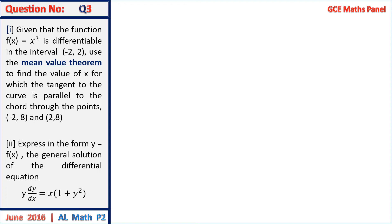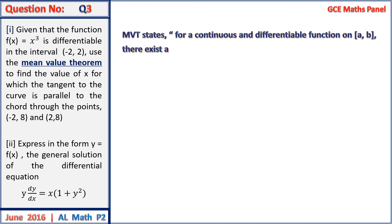Question 3: given that f of x equals x cubed is differentiable on the interval minus 2 to 2, use the mean value theorem to find the value of x for which the tangent to the curve is parallel to the chord through the points (minus 2, minus 8) and (2, 8). The mean value theorem states that for a continuous and differentiable function on interval A to B, there exists a number C such that f prime of C equals f of B minus f of A, all on B minus A.